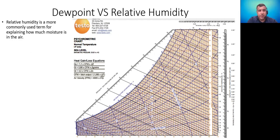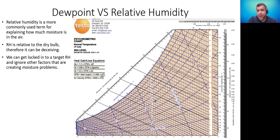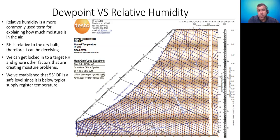Dew point versus relative humidity. We're very familiar with relative humidity — it's a commonly used term for explaining how much moisture is in the air. Remember that relative humidity is relative to the amount of humidity the air can hold. Very warm air can hold more moisture. So relative humidity can be deceiving because it's a moving target — it changes with dry bulb temperature. We can get locked into a target relative humidity range and ignore other factors creating moisture problems. We could have a moisture problem even if relative humidity appears to be in an acceptable range.